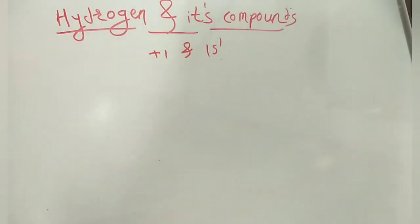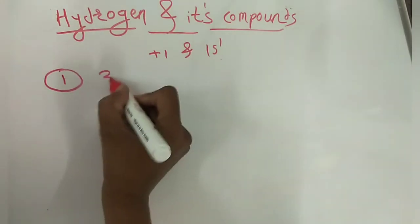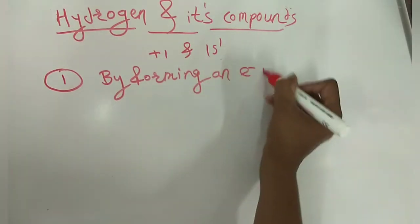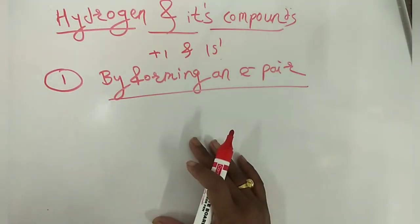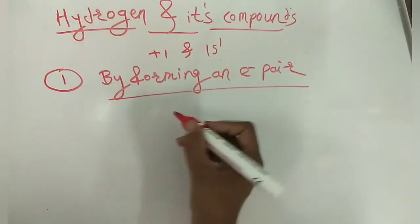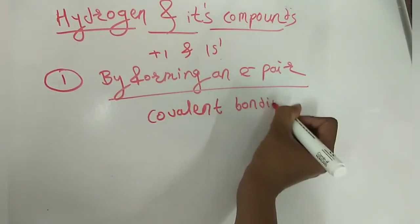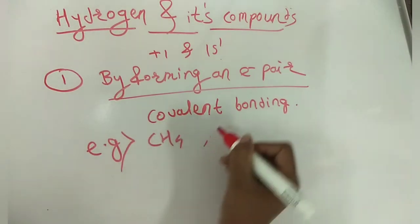The first way hydrogen attains stability is by forming an electron pair bond with another atom. This type of stability is achieved by P-block elements, which are generally non-metals, and it generates a covalent bond. Examples in this category include methane, hydrogen molecule, and water molecule.